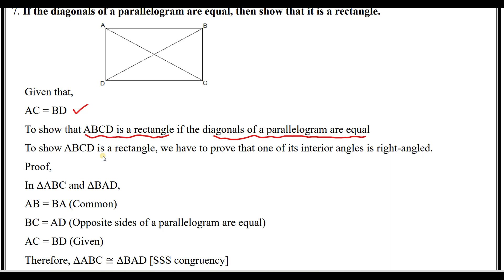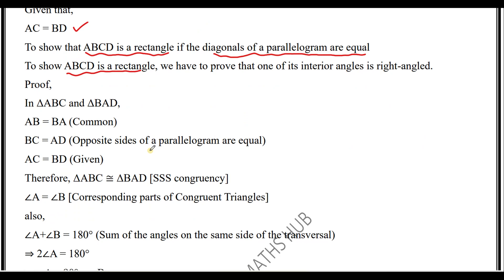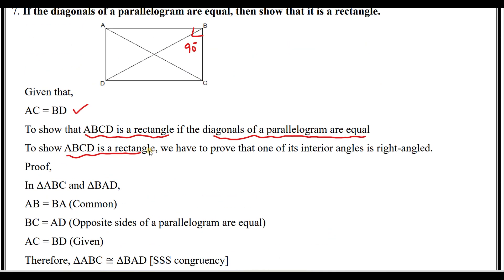Consider triangle ABC and triangle BAD. They have a common side AB. BC equals AD because opposite sides of a parallelogram are equal. AC equals BD is given — the diagonals of the parallelogram are equal. So three sides of triangle ABC are equal to three sides of triangle BAD.